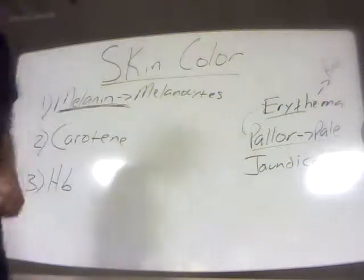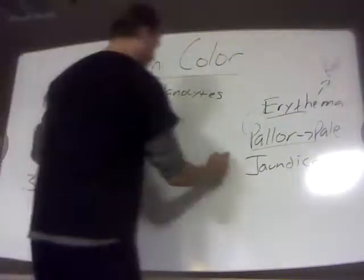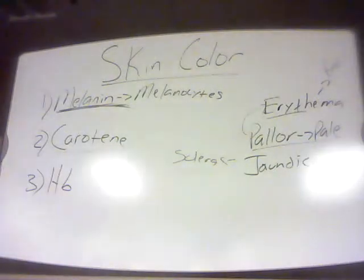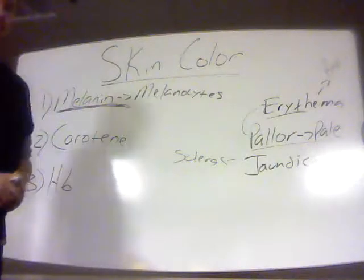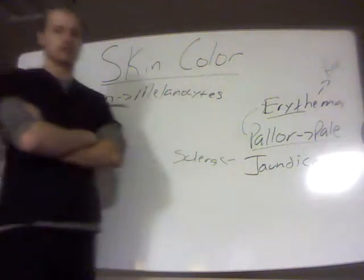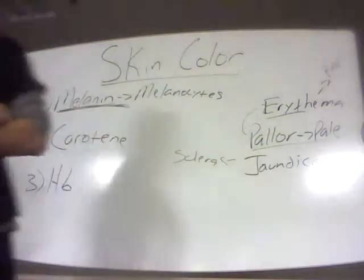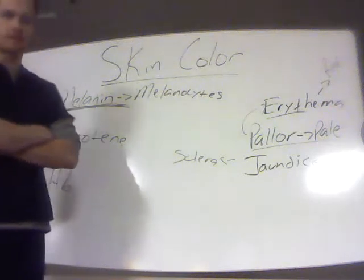Jaundice is basically when you see the skin turn yellow, and that's typically indicative of liver failure when people become jaundiced. Not just the skin turns yellow — the sclera turns yellow too. The sclera is the white of the eye. When people are undergoing liver failure, their dying liver leaks chemicals into the blood, one of them being bilirubin, which is a byproduct of iron metabolism. As red blood cells die, we recycle the iron in the liver. As the liver dies, it leaks this out, and as bilirubin is in the blood, it leaks into the skin and the white of the eyes, giving them that yellow color.